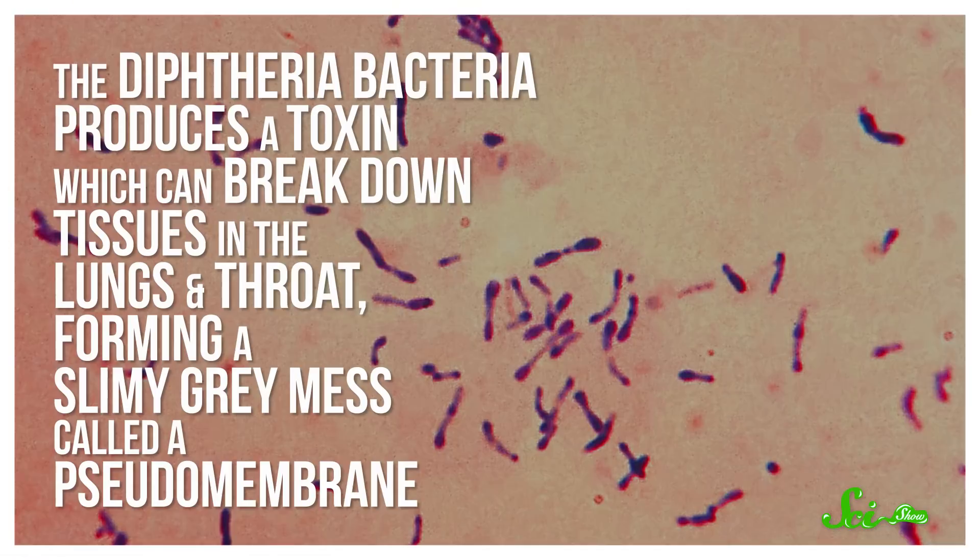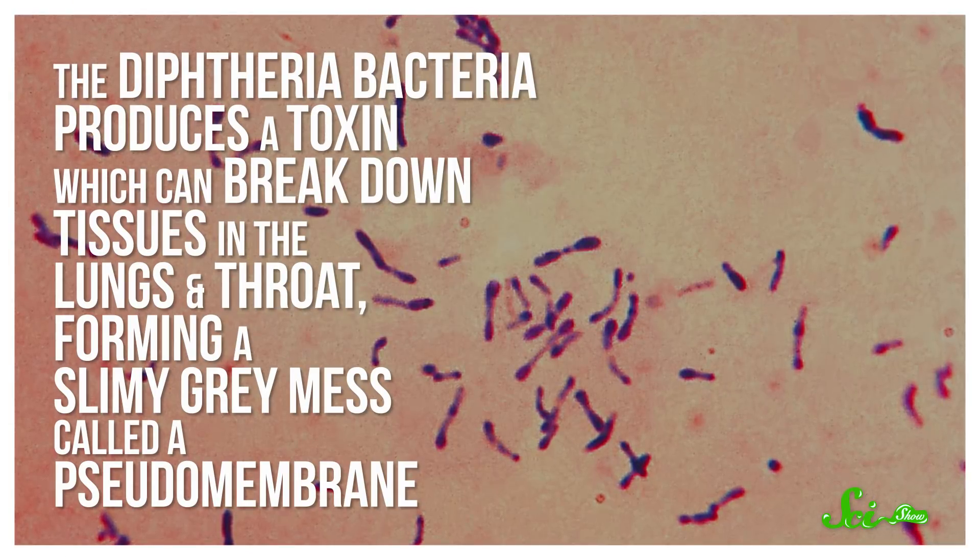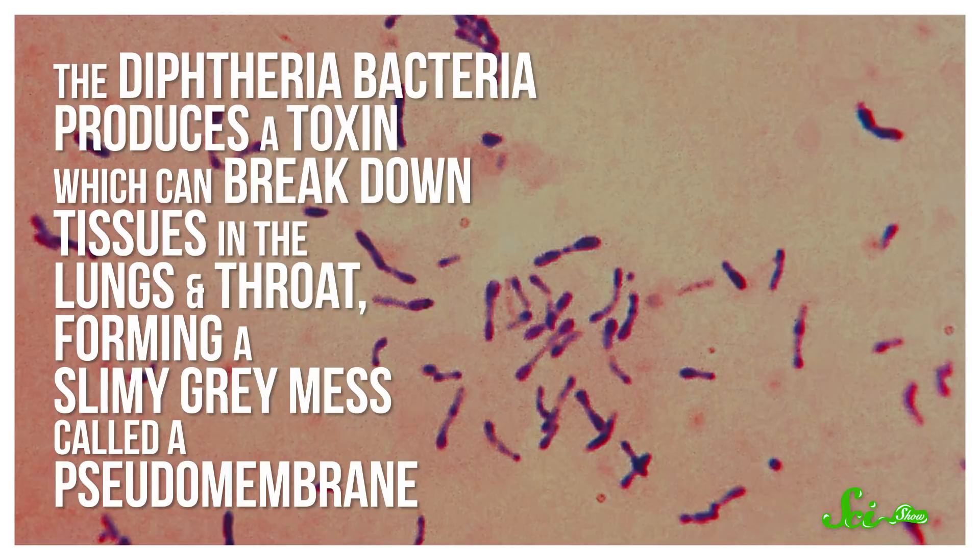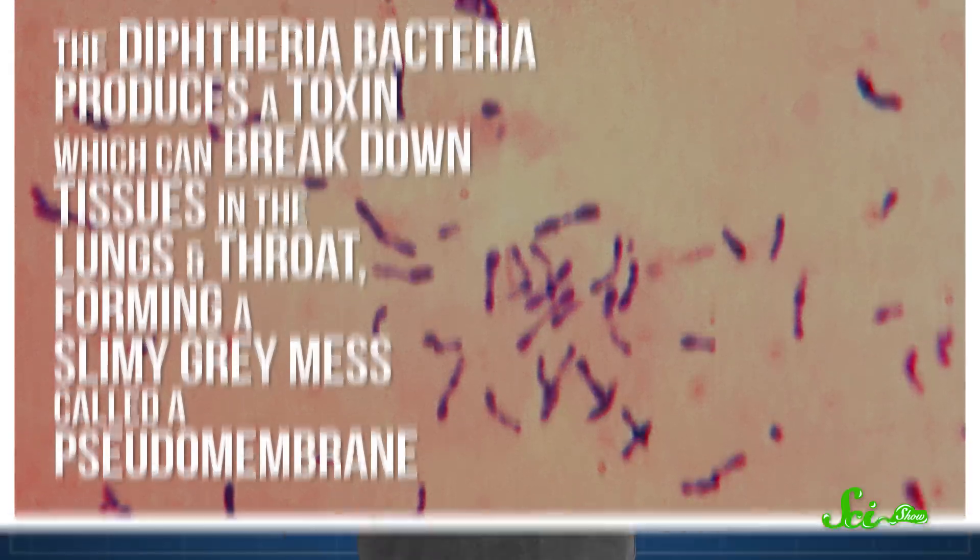Which is really awesome, because this thing is pretty nasty. The diphtheria bacteria produces a toxin which can break down tissues in the lungs and throat, forming a slimy gray mess called a pseudomembrane. People, usually kids, were often suffocated because of it, which is why the disease became known as the strangling angel.